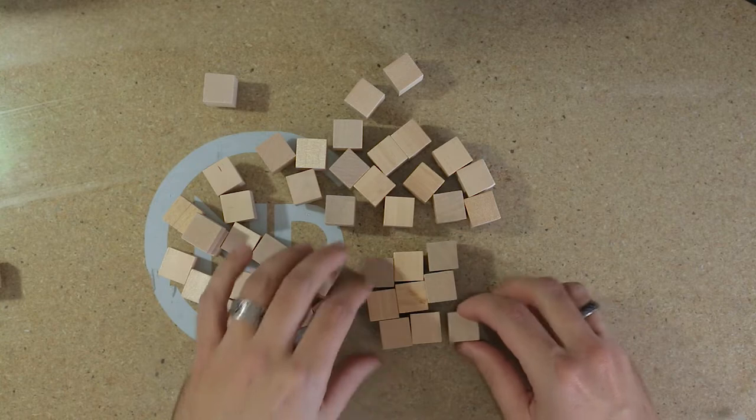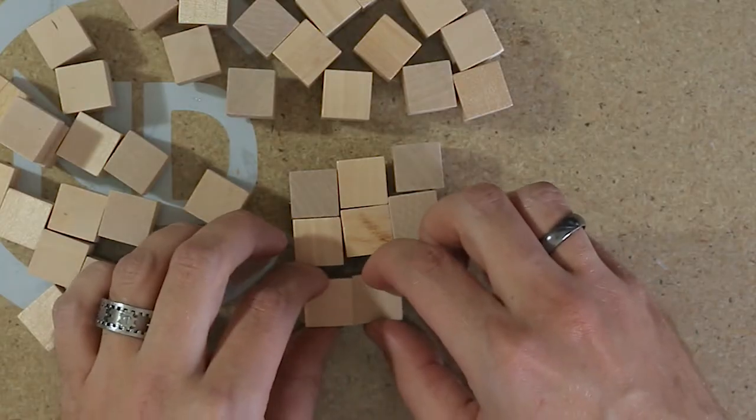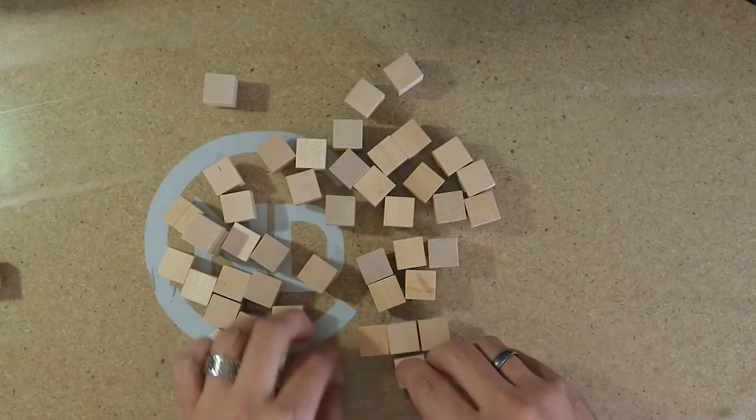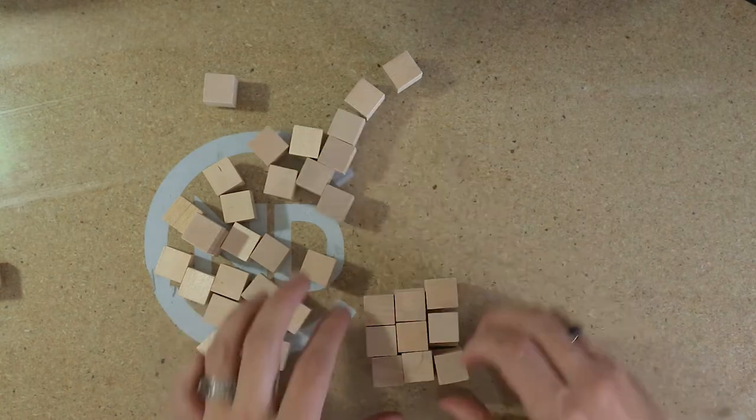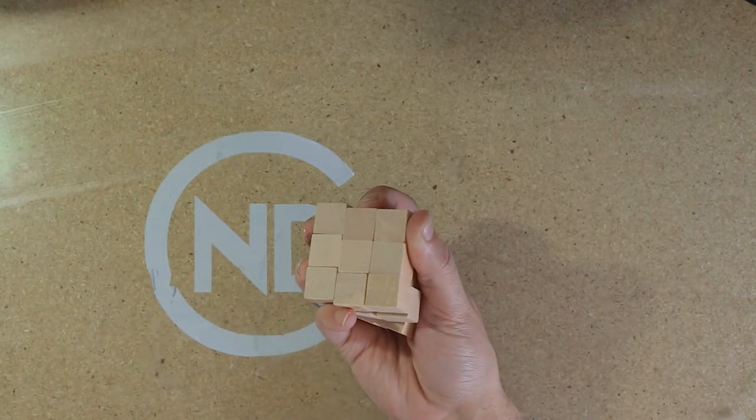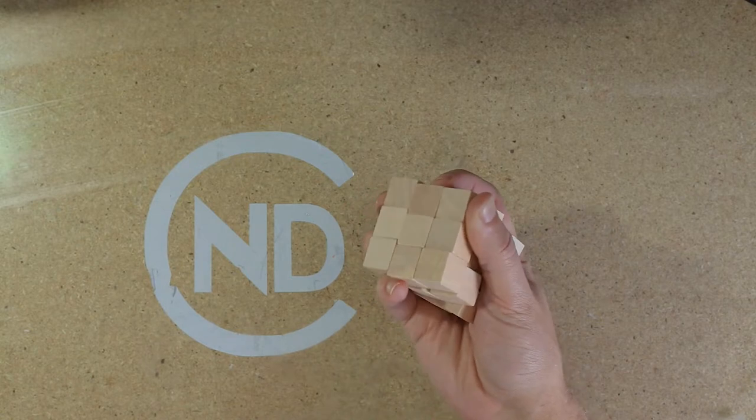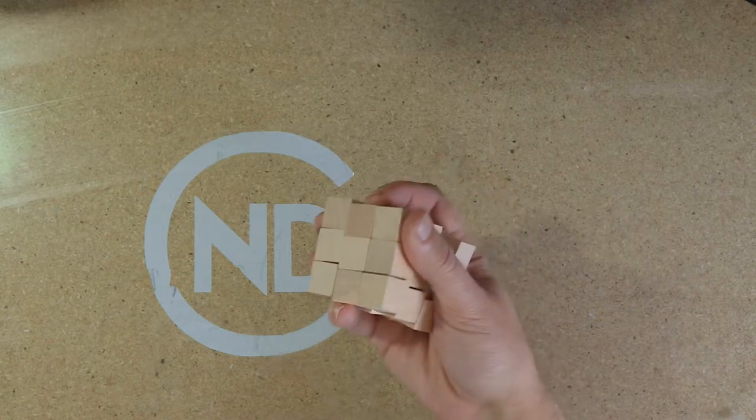These are actually very nice little cubes. If not super uniform, but they should work well enough. There is our cube puzzle. That's it. All done. Super easy. 27 piece cube puzzle. Almost as easy as a one piece cube puzzle.